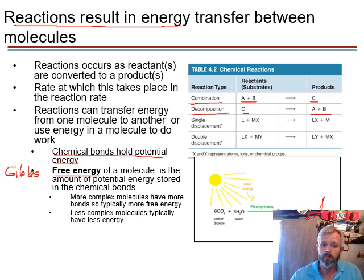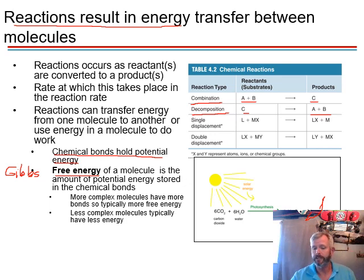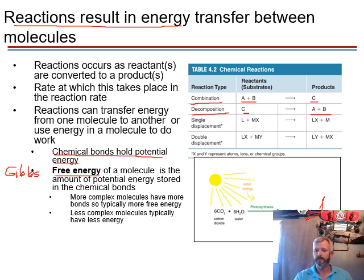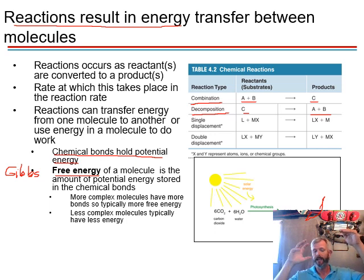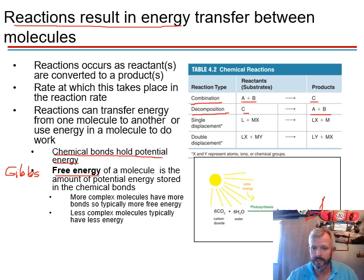The potential energy in those molecules and bonds is referred to as free energy, also called Gibbs free energy. It's the amount of potential energy in those bonds. More complex molecules with many different bonds have more free energy, while less complex molecules typically have less energy. Our first law of thermodynamics says energy must be conserved: if we break a high-free-energy molecule down to a low-free-energy molecule, the gap in energy must come from somewhere — usually released as heat or kinetic energy.